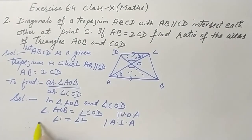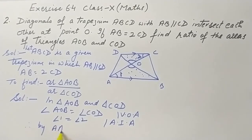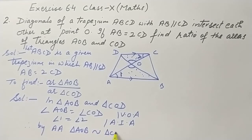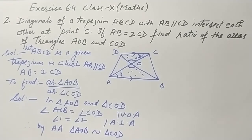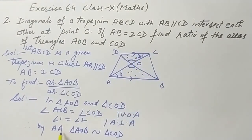Therefore, by the Angle-Angle (AA) criterion, triangle AOB is similar to triangle COD. AA means if two angles of one triangle are equal to the corresponding two angles of another triangle, then the triangles are similar.